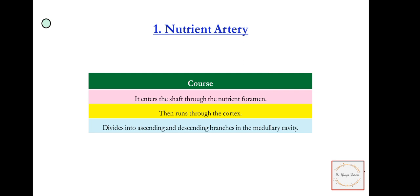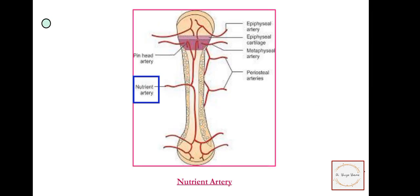In the blue box I have shown you the nutrient artery. It enters through the nutrient foramen and then ascends upwards and downwards.